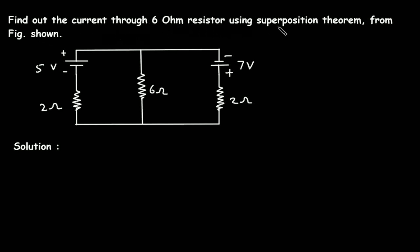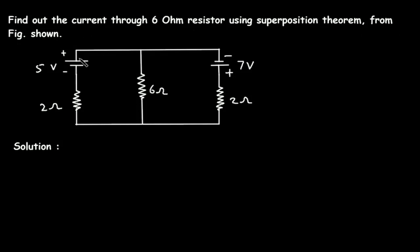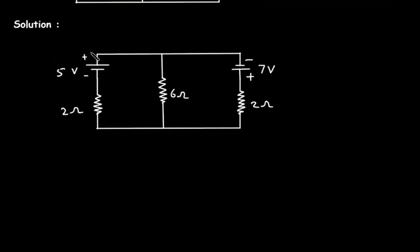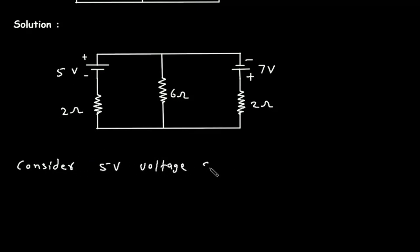Find the current through the 6 ohm resistor using the superposition theorem. We have to find the current through this 6 ohm resistor using the superposition theorem. First, we will consider the 5 volt voltage source and turn off the 7 volt voltage source. Then we will consider the 7 volt voltage source and turn off the 5 volt voltage source.